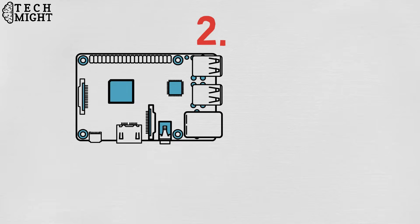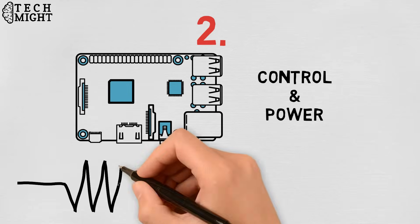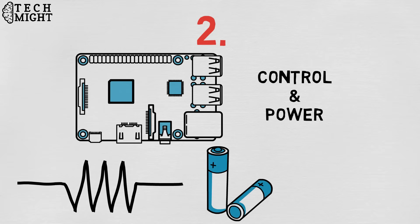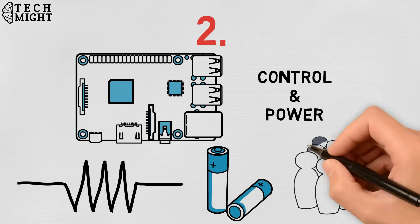Second, robots need electrical components that control and power the machinery. Essentially, an electric current, a battery for example, is needed to power a large majority of robots.